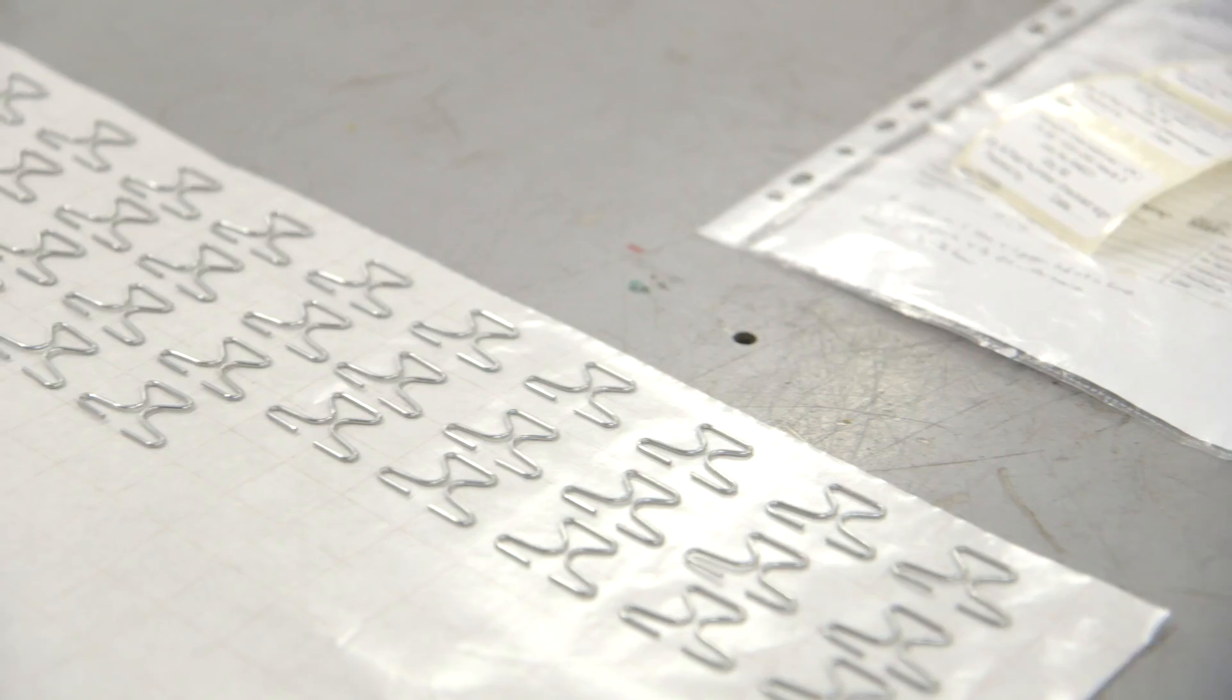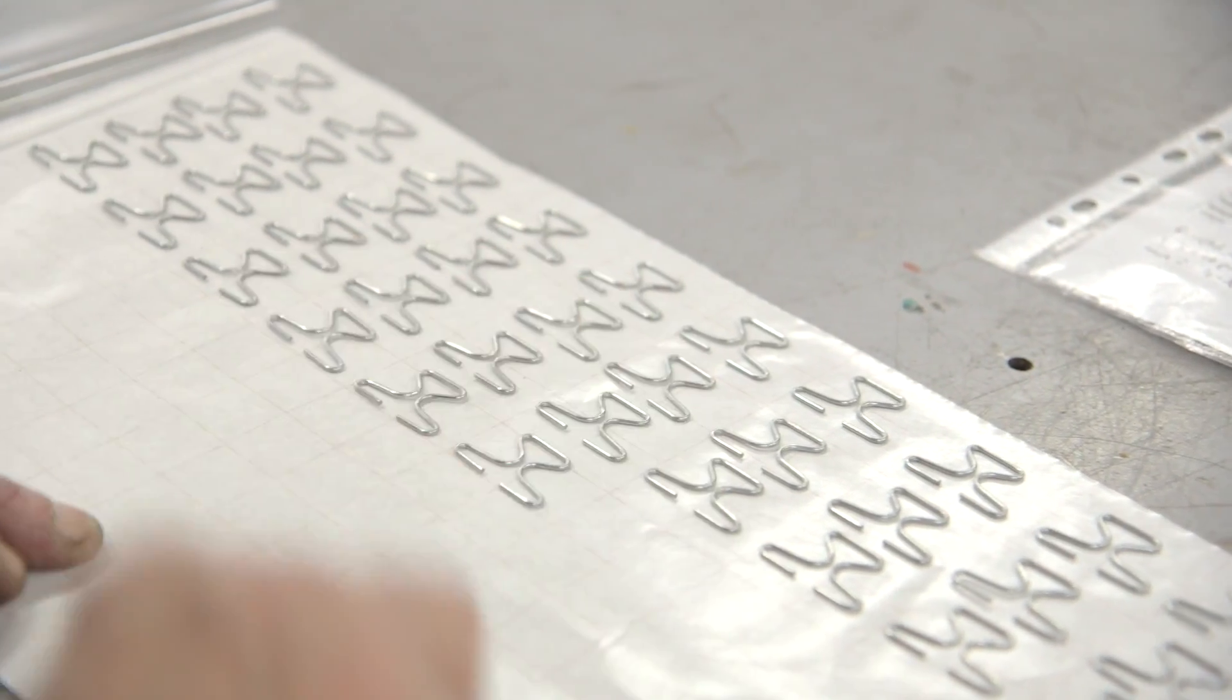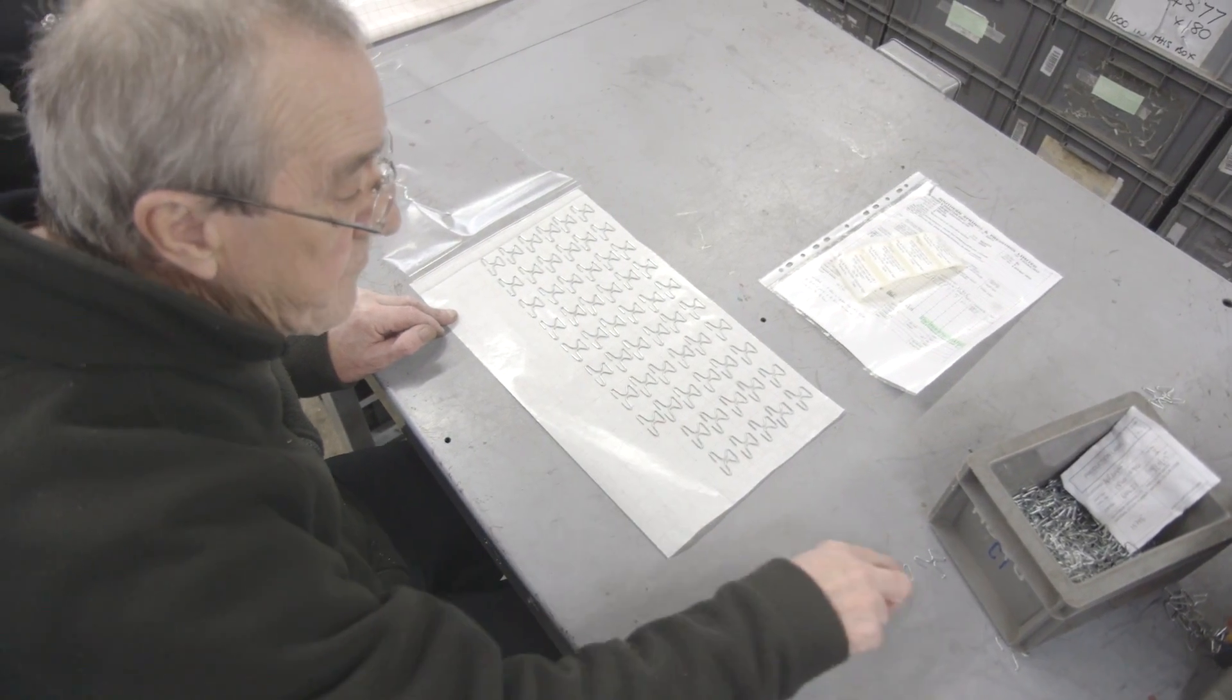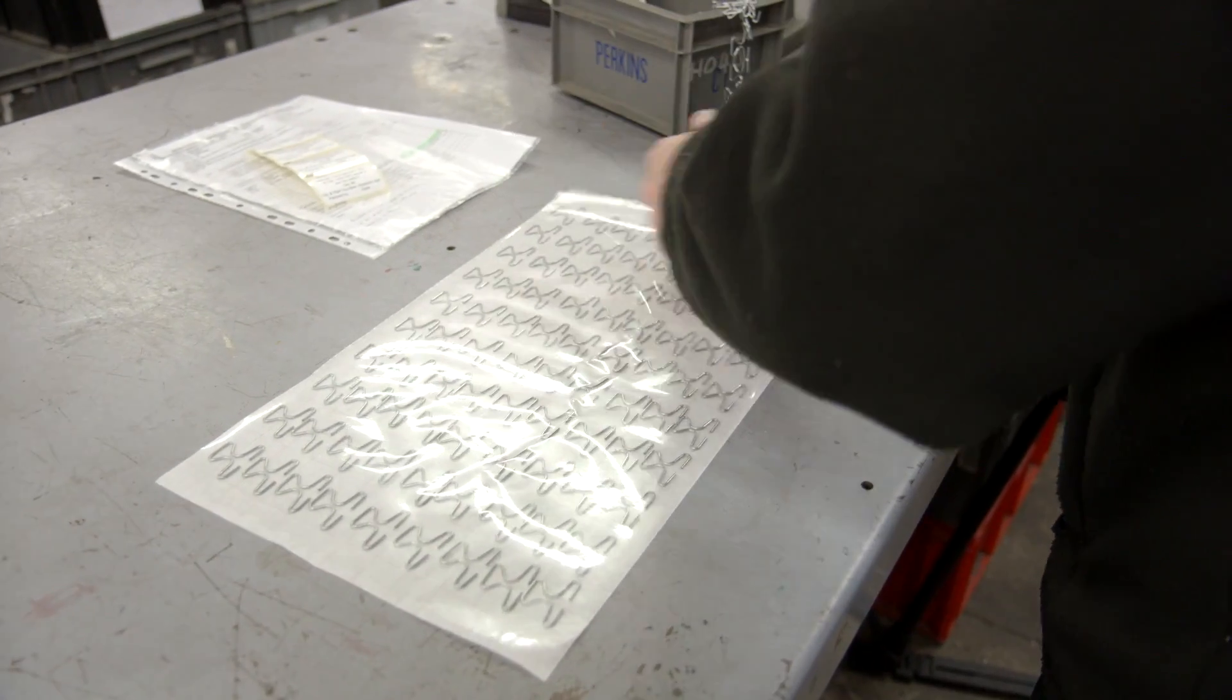Special packaging and bar coding is offered if required as well as our assembly services. We can supply sub-assemblies to reduce your inventory costs and save you time and money.